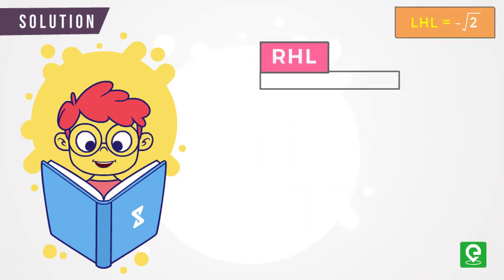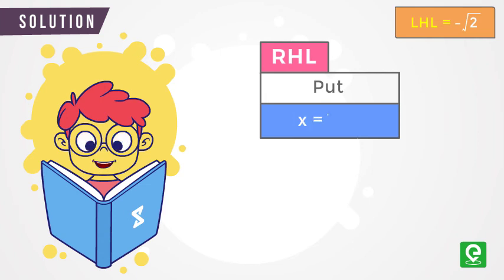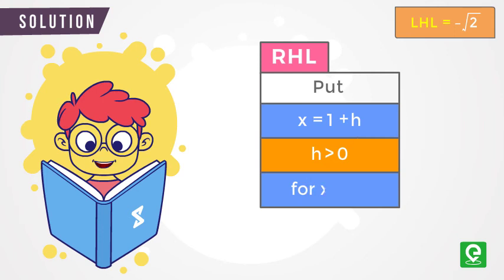Again, for right-hand limit, put x = 1 + h where h > 0. Hence for x approaching 1, h approaches 0.